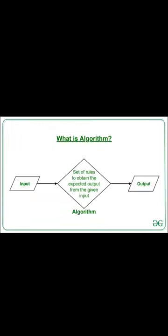An algorithm is a finite sequence of instructions or a step-by-step procedure for solving a problem. Algorithm is a group of steps to solve any particular problem written in simple English. It is nothing but dividing a particular task into steps. These are written to achieve a desired result or perform a particular task. A computer program is an algorithm written for a computer in a special programming language.